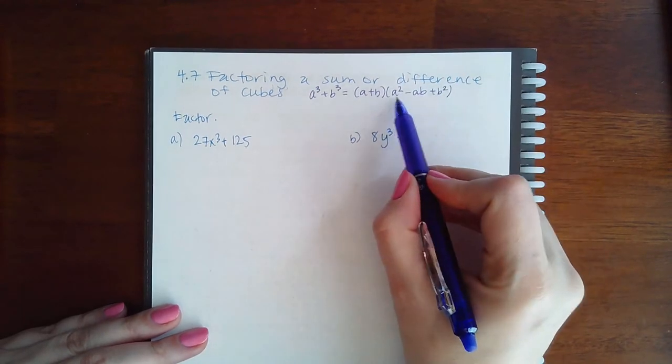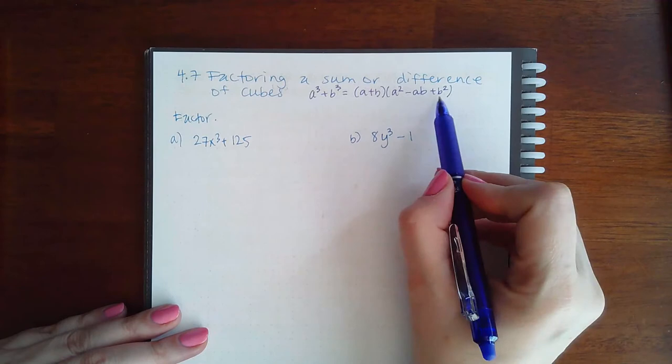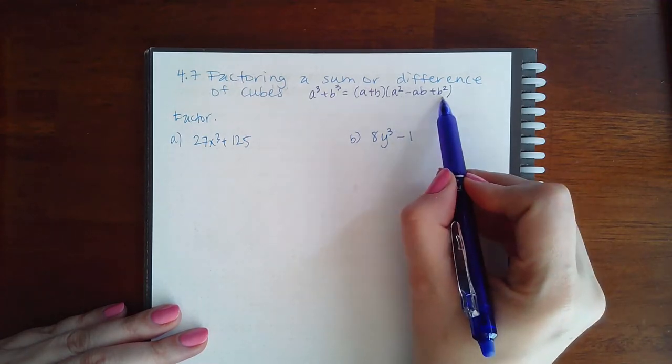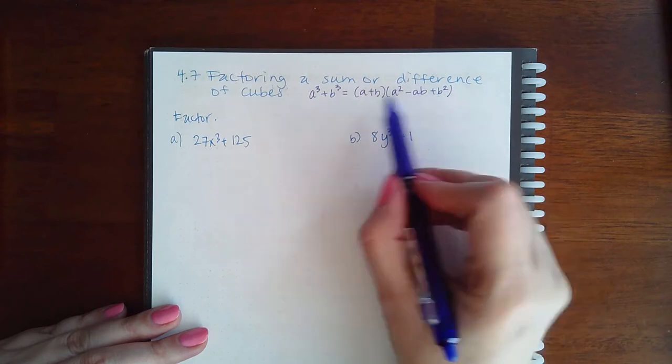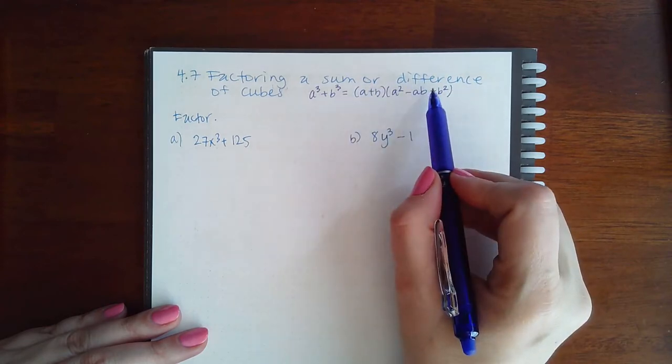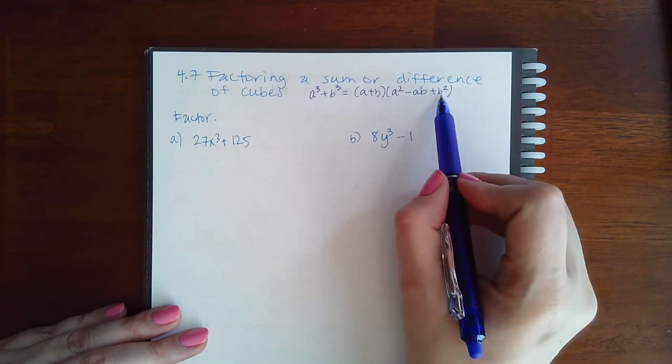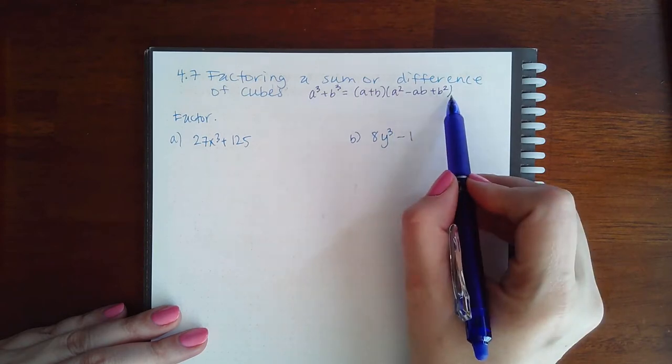Now notice that the formula does not have this factored into its own two parentheses. That's because this cannot be factored. So once you've applied the sum or difference of cubes formula, do not attempt to factor this longer factor here. It cannot factor any further.